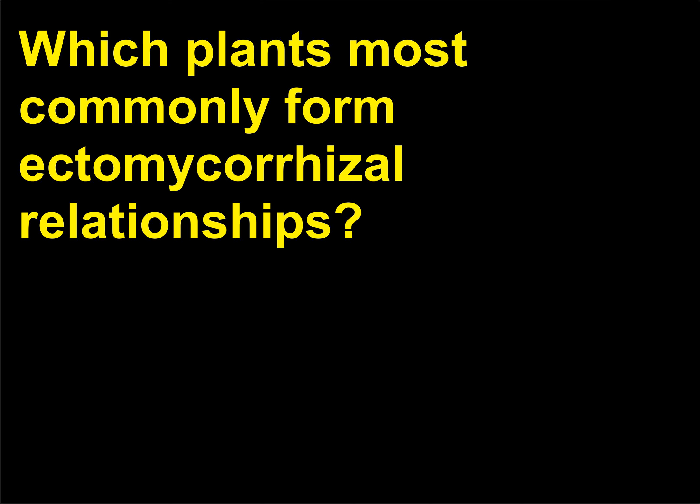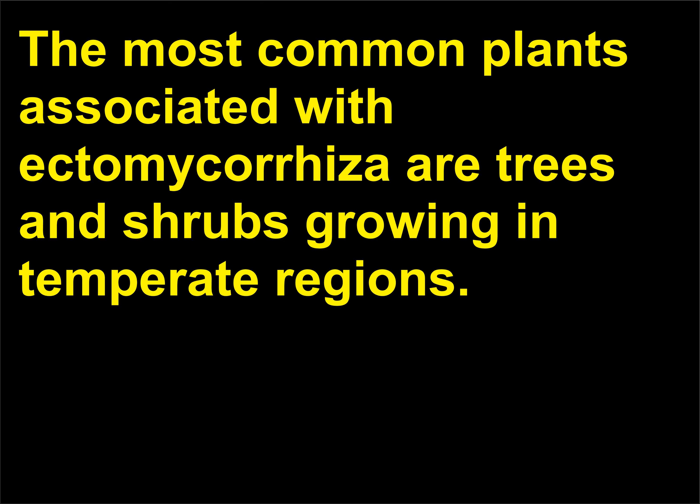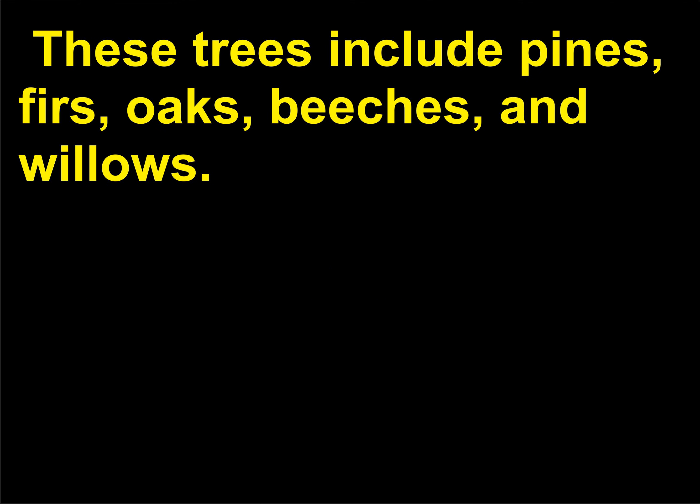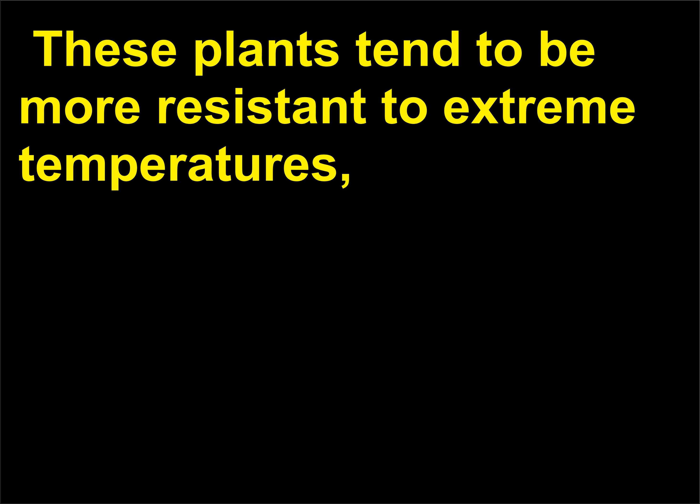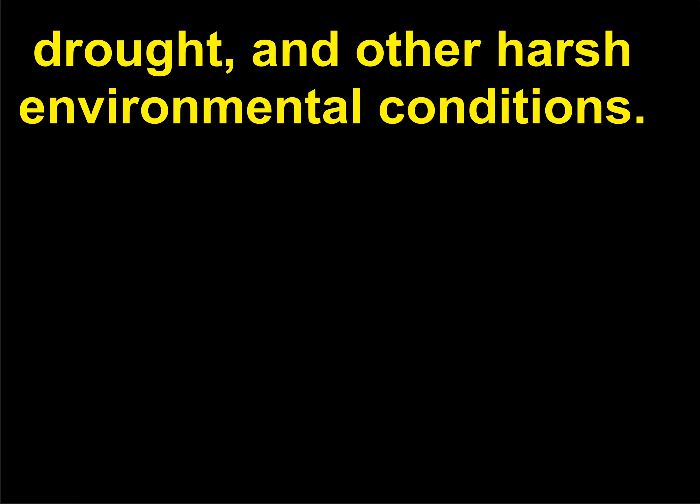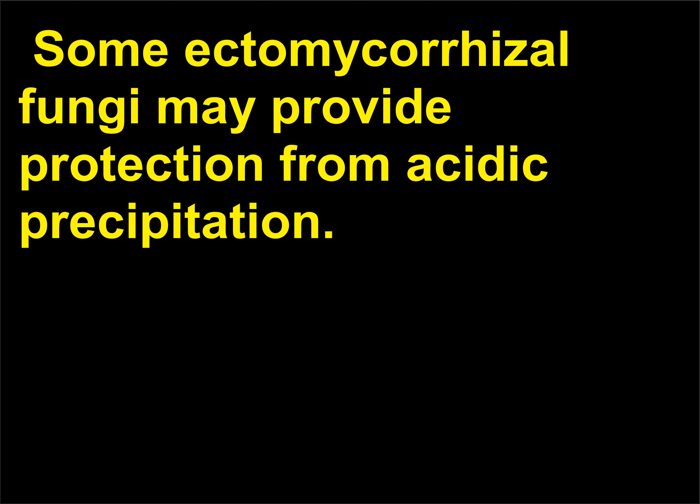Which plants most commonly form ectomycorrhizal relationships? The most common plants associated with ectomycorrhiza are trees and shrubs growing in temperate regions, including pines, firs, oaks, beeches, and willows. These plants tend to be more resistant to extreme temperatures, drought, and other harsh environmental conditions. Some ectomycorrhizal fungi may provide protection from acidic precipitation.